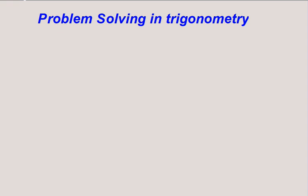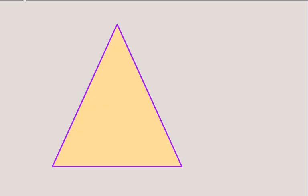The objective of today's video is to solve some problems in trigonometry. However, before we start, we need to remember some basic facts about various objects. Consider this triangle — it's an isosceles triangle, and being isosceles, we know certain properties.